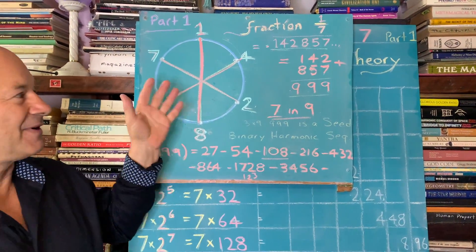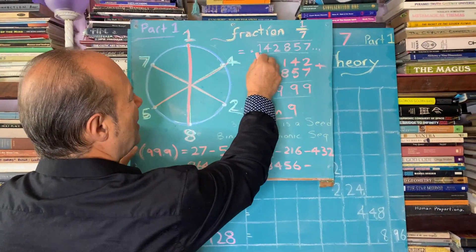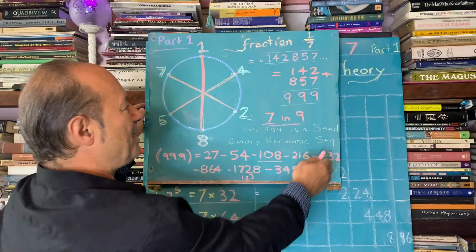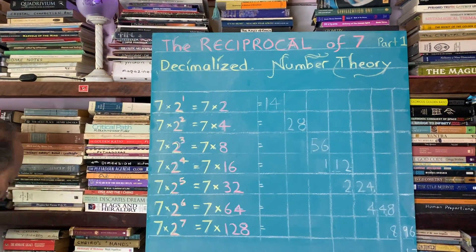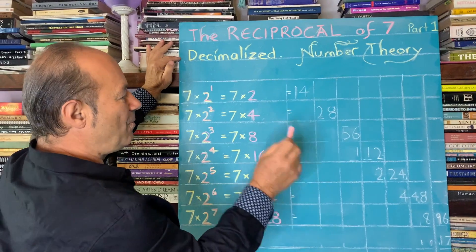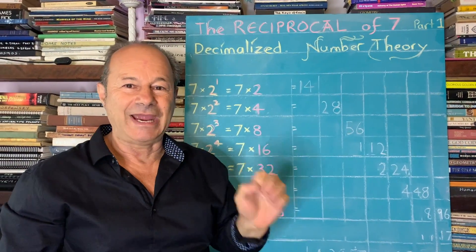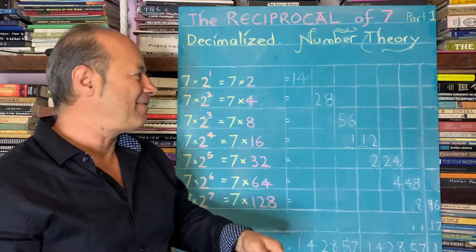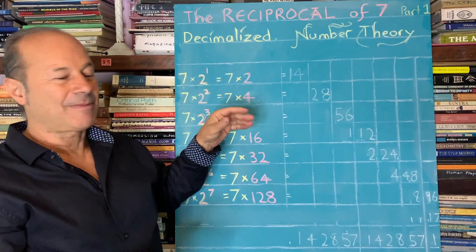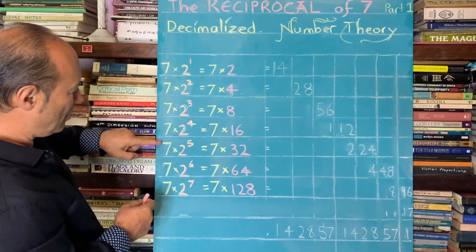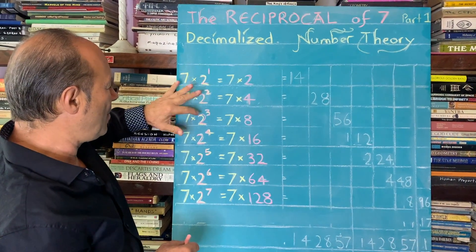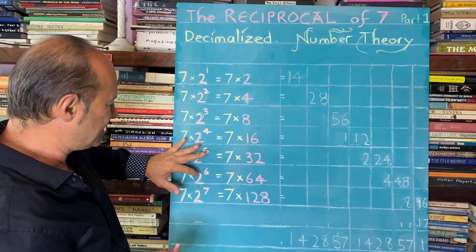I'm going to show you a little more number theory about the decimal 142857 — we want to know how we can actually derive that starting from the number seven. So we want to arrive at that decimal 0.142857, which goes on forever. I'm going to start with a bit of number theory, so just appreciate what I'm about to show you. We're going to multiply by seven all the binary codes — the powers of two: 2, 4, 8, 16, 32, 64, 128.